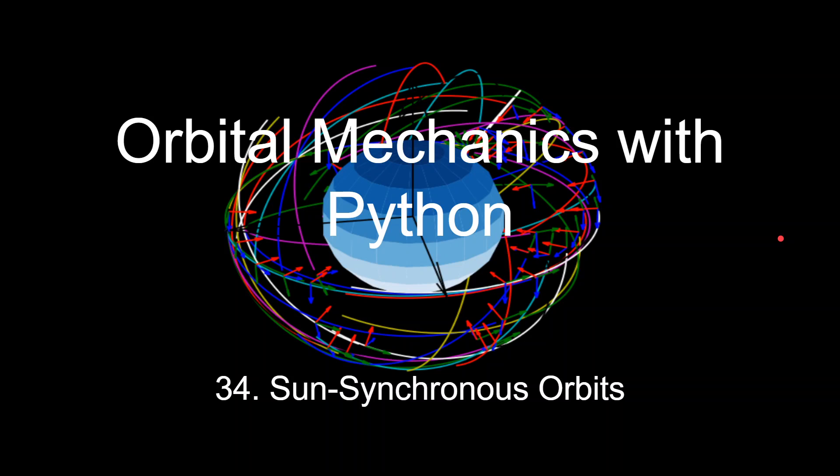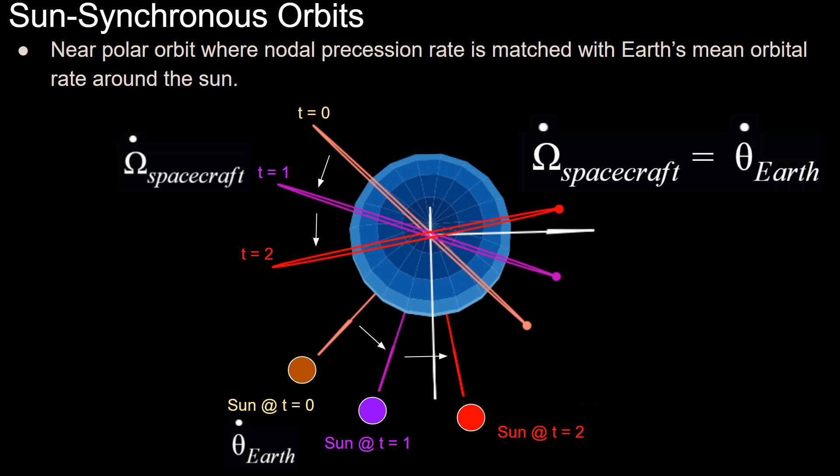This is the 34th video in this series on sun-synchronous orbits. We start with a definition, where the sun-synchronous orbit is defined as a near-polar orbit, where the nodal precession rate is matched with Earth's mean orbital rate around the sun.